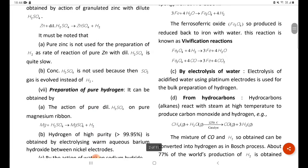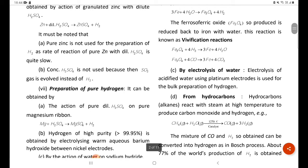By electrolysis of water: electrolysis of acidified water using platinum electrodes is used for the bulk preparation of hydrogen.